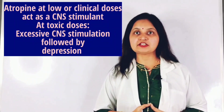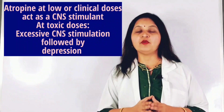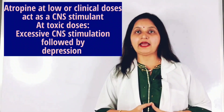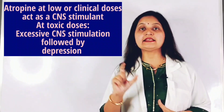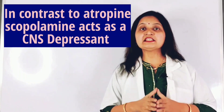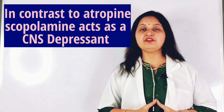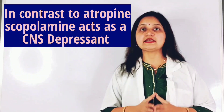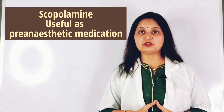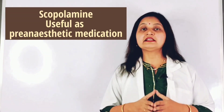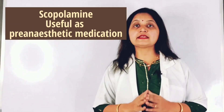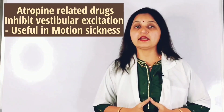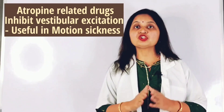This is followed by depression such as circulatory collapse, respiratory failure, paralysis, coma and death. In contrast to atropine, scopolamine acts as a CNS depressant. It can easily cross the blood-brain barrier and produce CNS depression. This is why scopolamine is used as a pre-anesthetic medication — it calms the patient and acts as a tranquilizer.